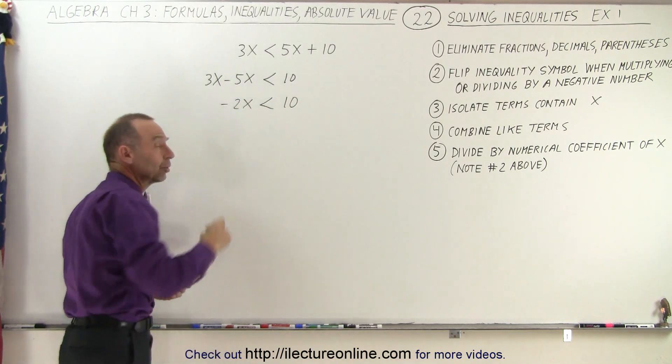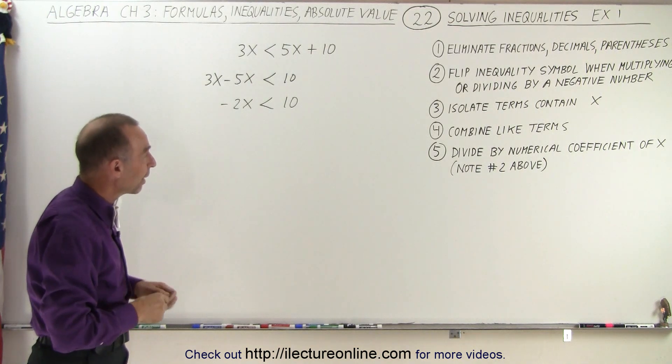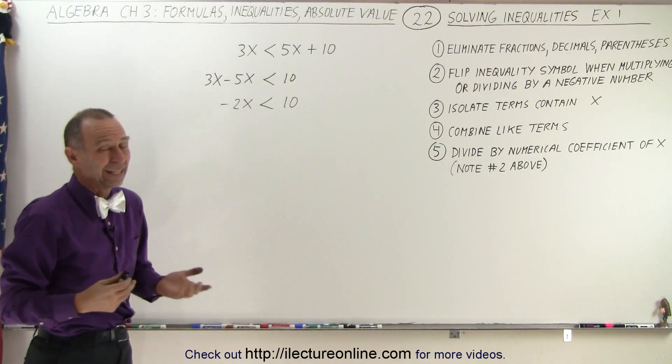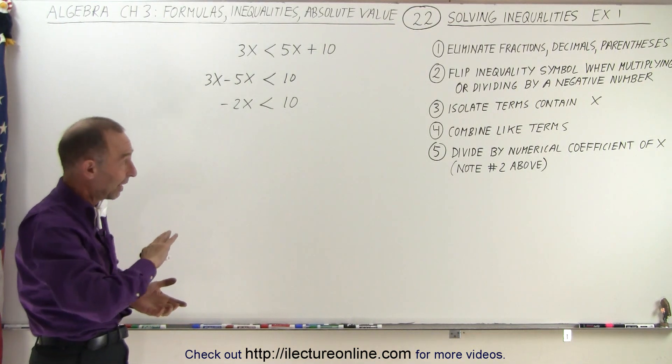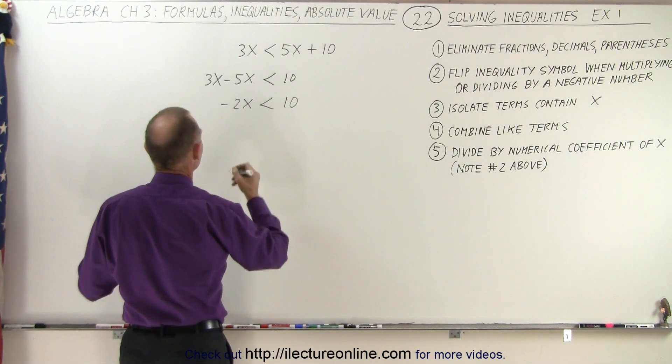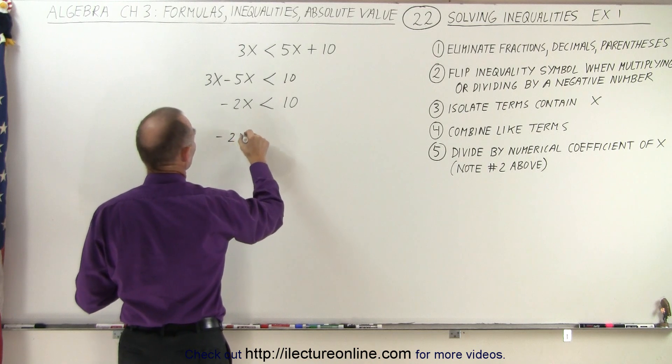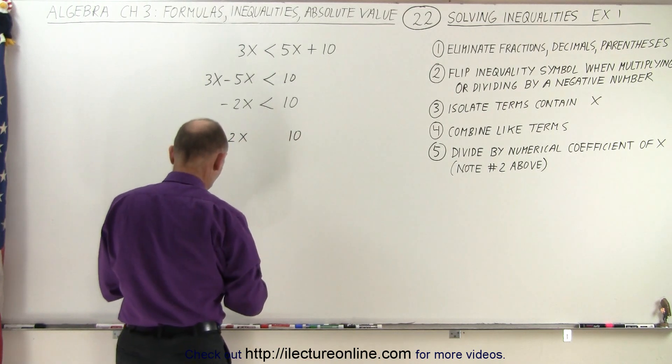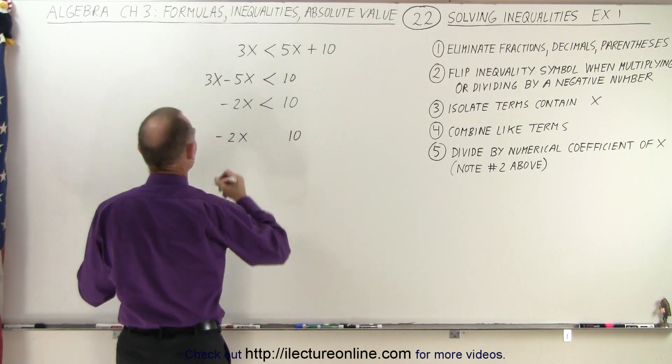And now we need to divide both sides of the inequality by the numerical coefficient of x, which is a negative number, which means we're going to have to flip the inequality sign. So we're going to rewrite that as negative 2x and 10.